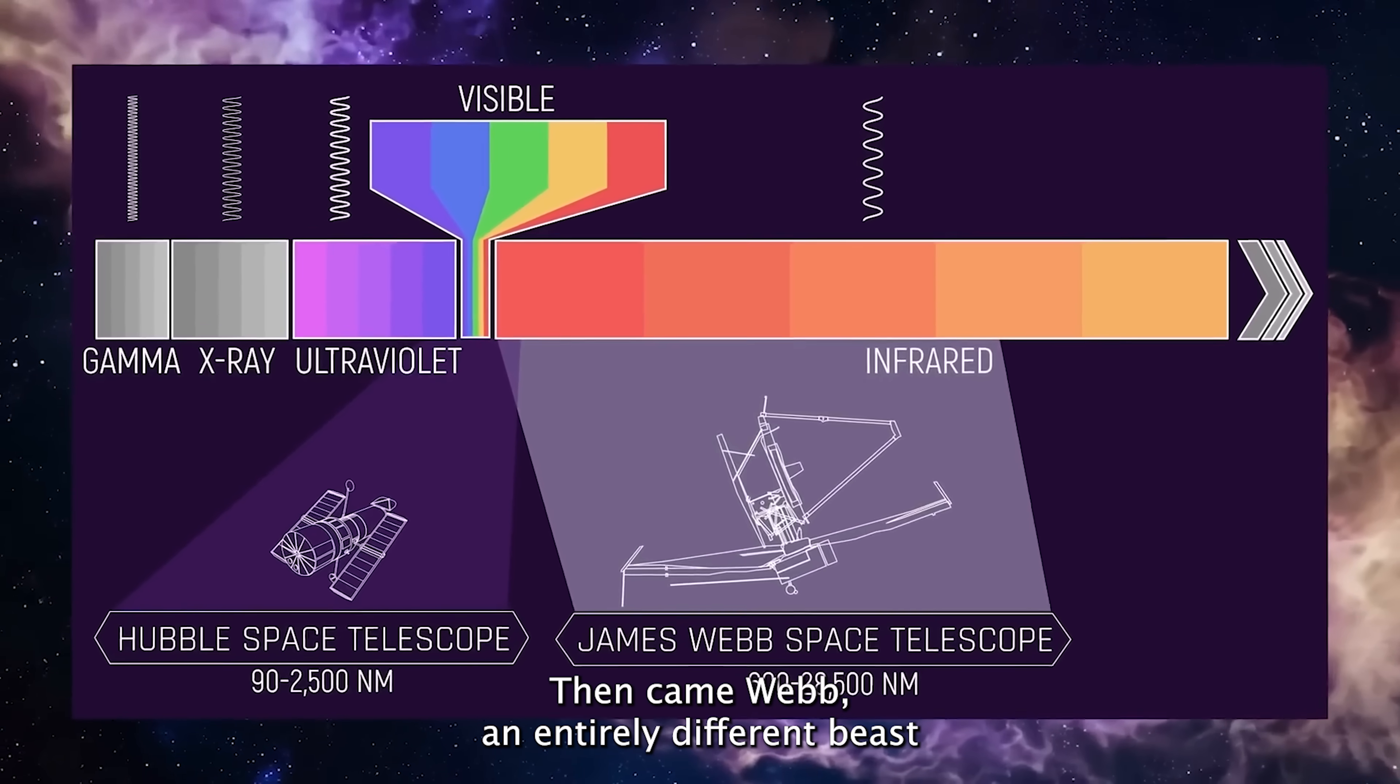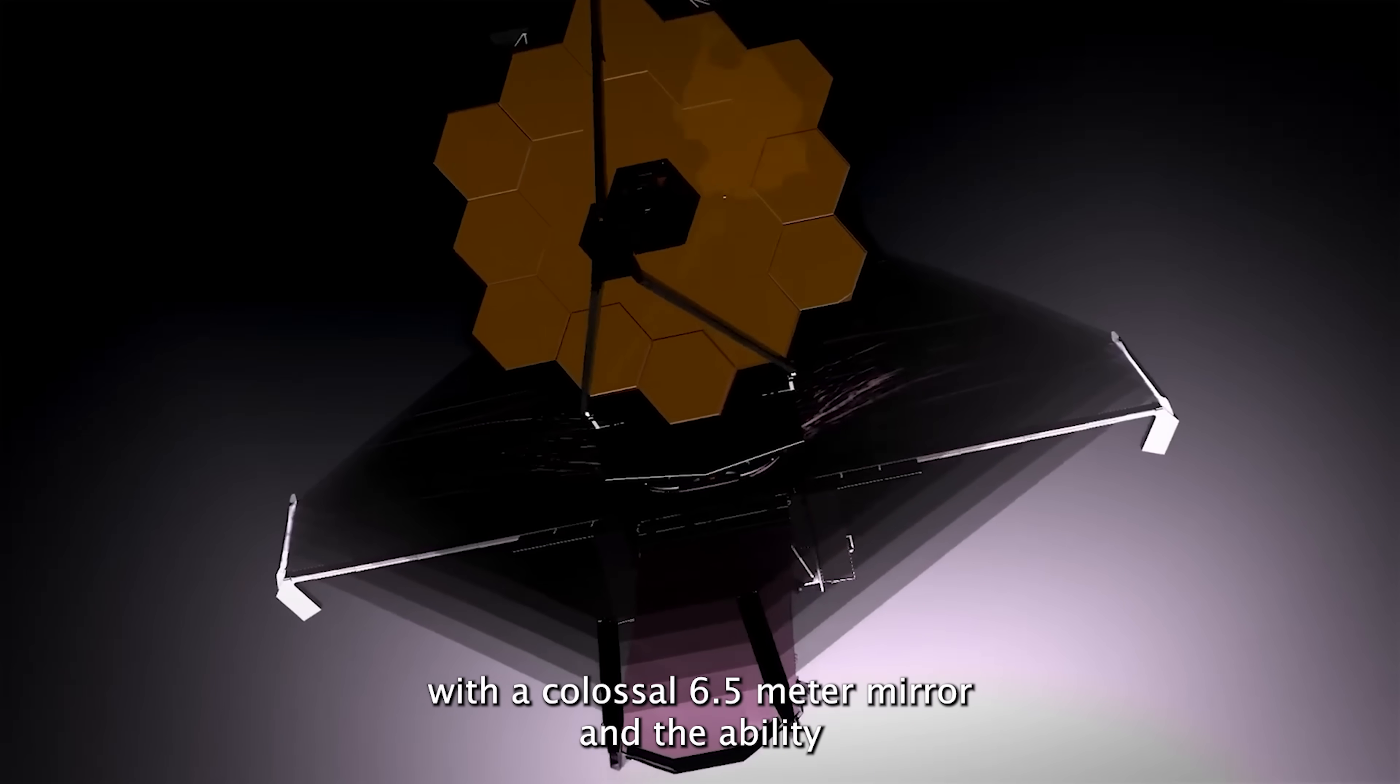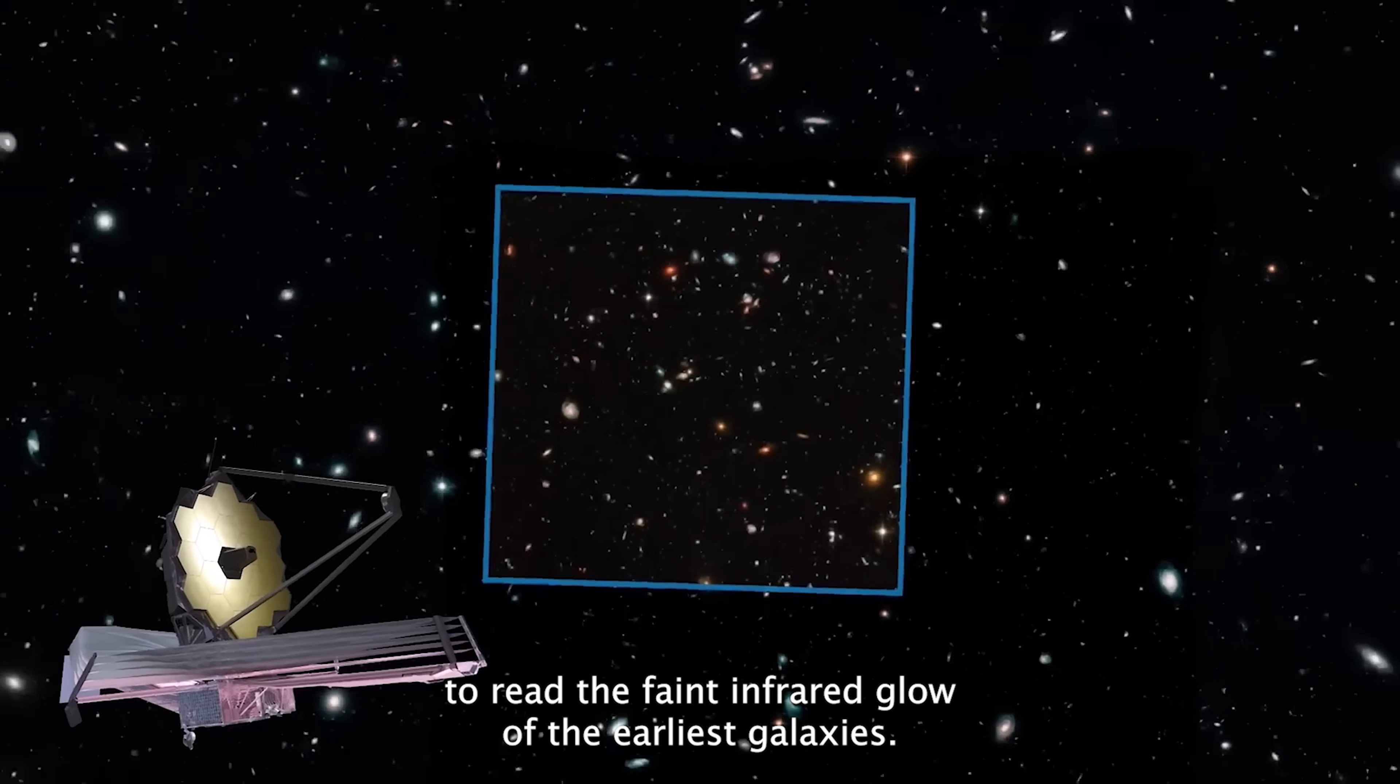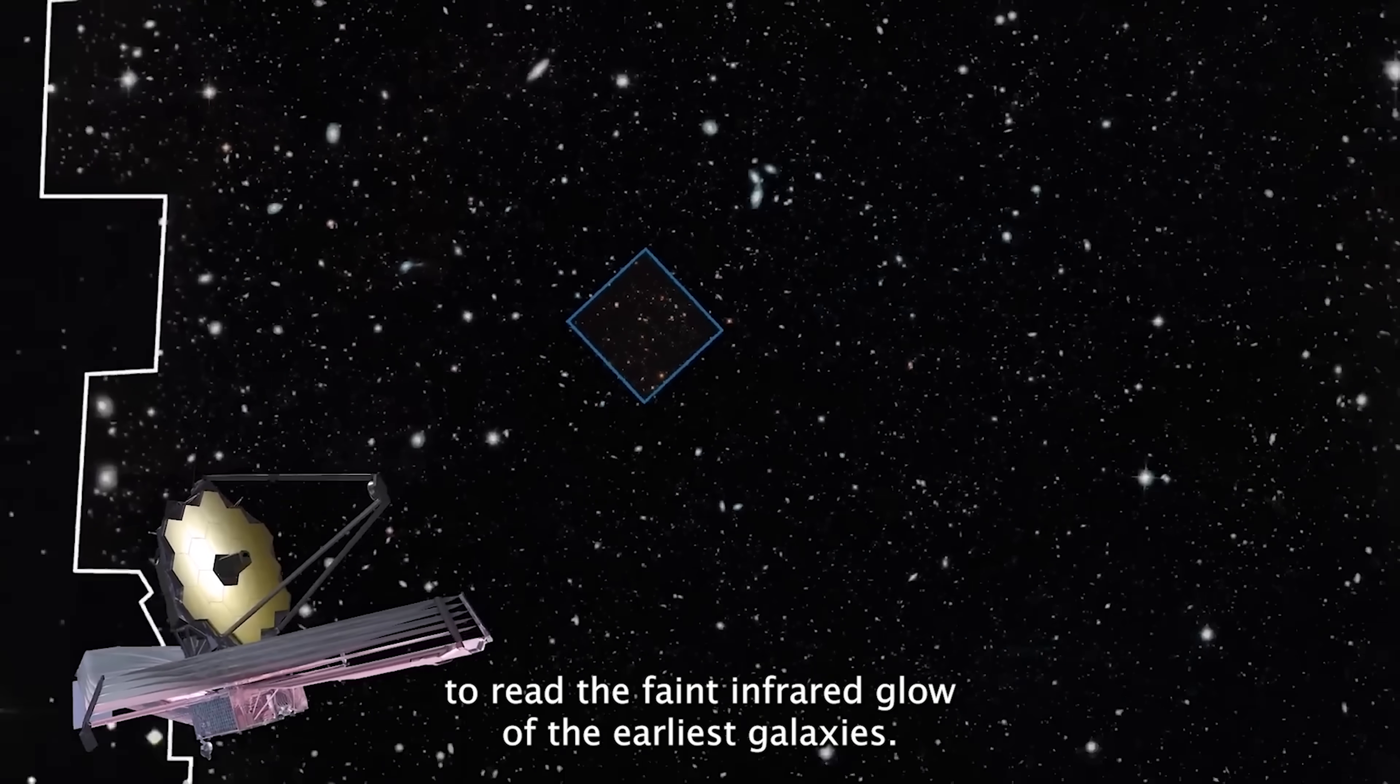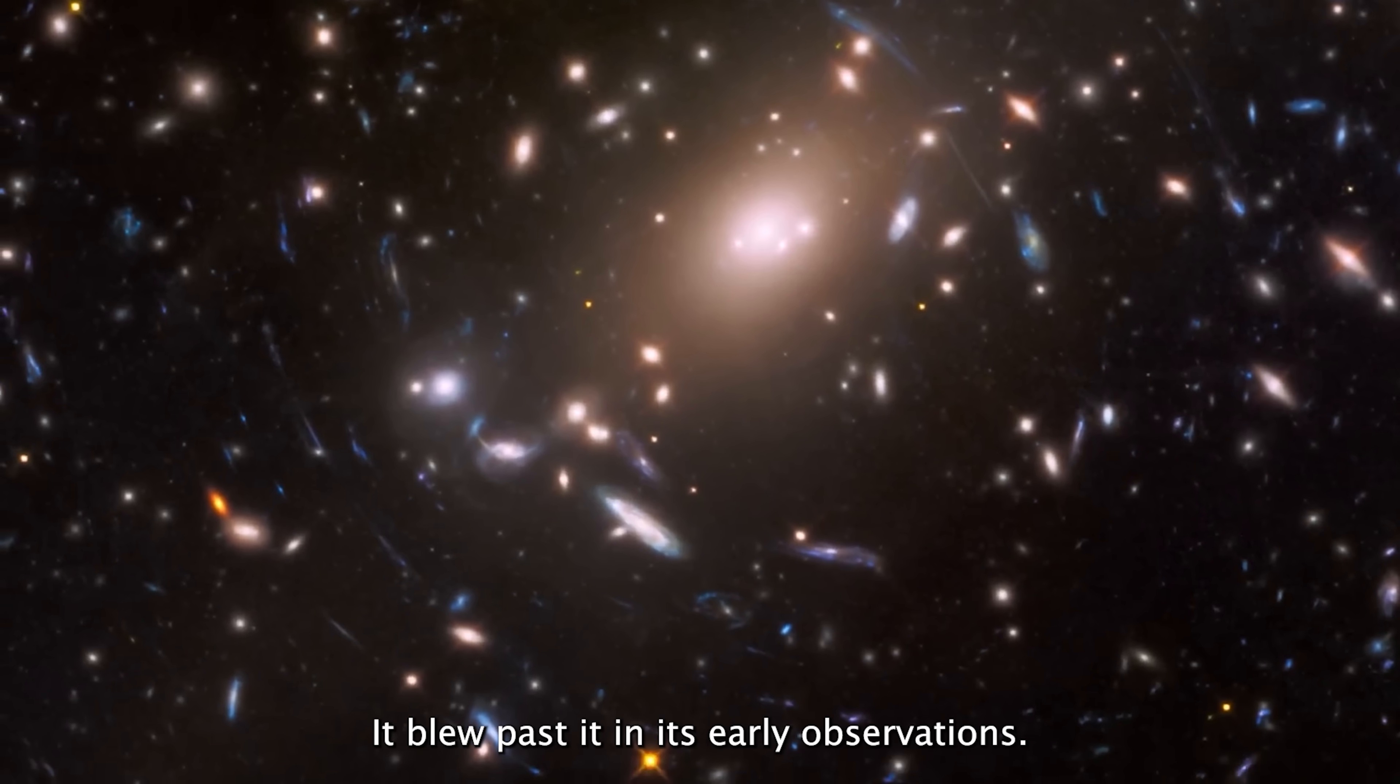Then came Webb, an entirely different beast. With a colossal 6.5-meter mirror and the ability to read the faint infrared glow of the earliest galaxies, Webb didn't merely extend Hubble's legacy, it blew past it.